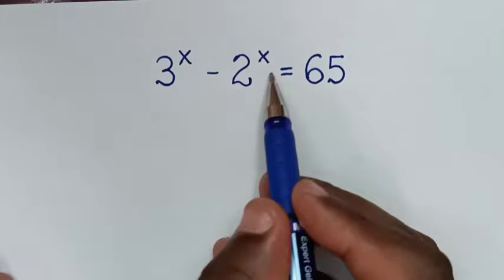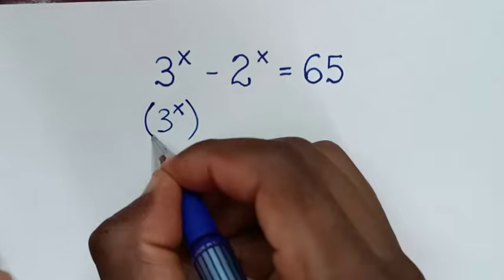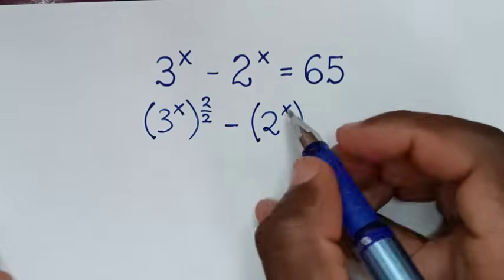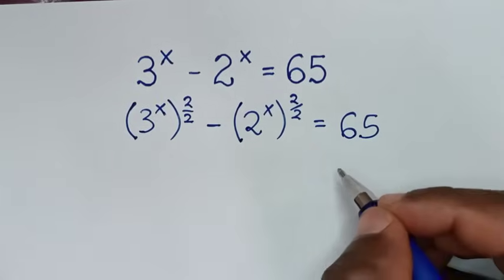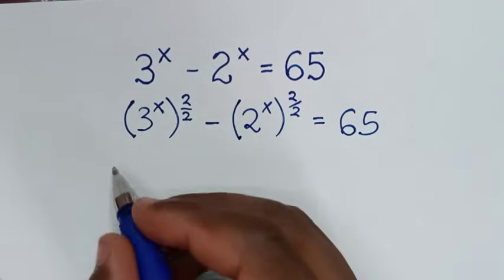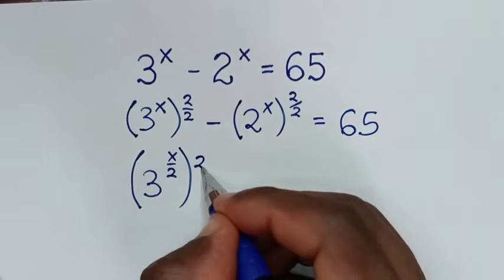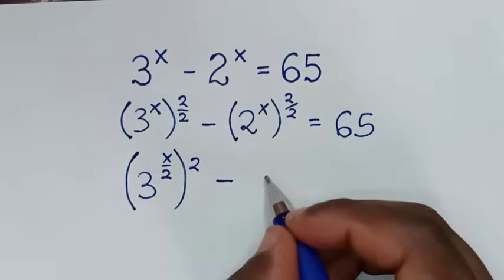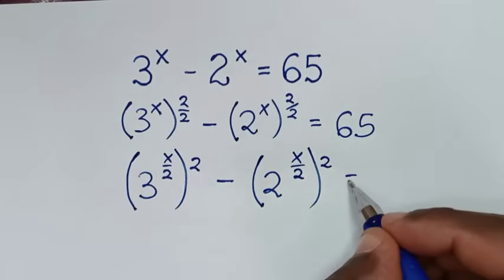In the first step, from the left side, we'll make it in the form of a perfect square. We'll write 3 power of x, then bracket, powered by 2 over 2. Then minus 2 power of x, also in bracket, powered by 2 over 2, equal to 65. To do this, we take the denominator of 2 inside the bracket, so it becomes 3 power of x over 2, squared, minus 2 power of x over 2, squared, equal to 65.